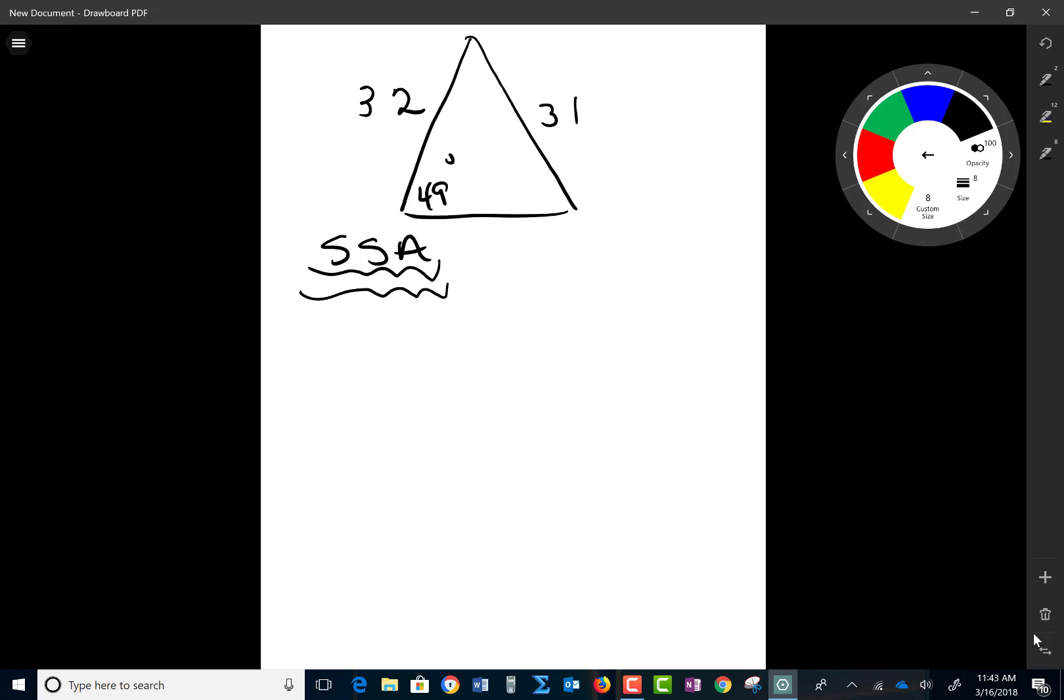So if I were going to try to find angle B, I could use my law of sines and I could use sine of 49 over 31 is equal to sine of B over 32.